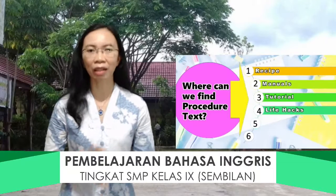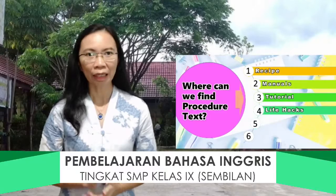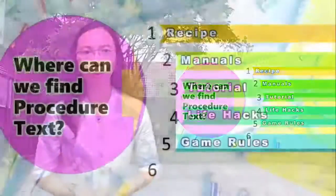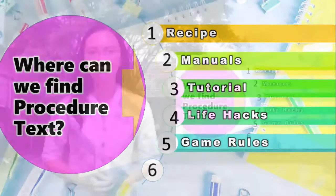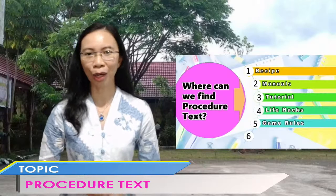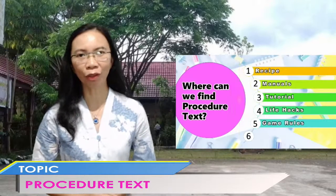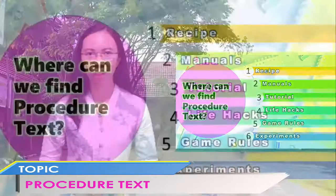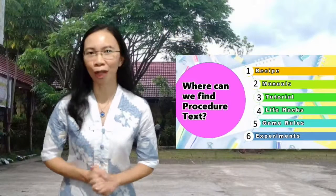Selanjutnya, jika kalian bermain game dan membaca aturan permainannya, maka game rules tersebut bisa dalam bentuk procedure text — seperti how to play snake and ladders, atau game-game yang lagi marak sekarang seperti PUBG, ada aturan-aturan atau rules dalam game tersebut. Yang terakhir, eksperimen — dalam eksperimen guidance, kita bisa menemukan procedure text, seperti how to make tape, or how to make salt, dan masih banyak contoh lainnya.